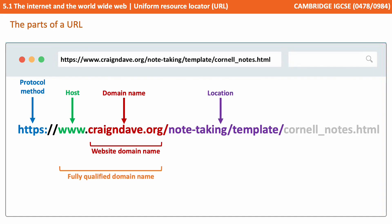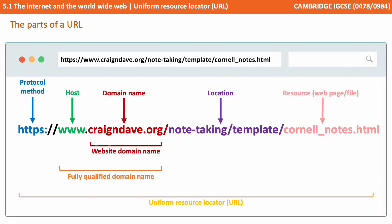Depending where you go within a given website, there may then be additional parts to the URL. Here we see a location: inside the CraigAndDave.org domain, we've gone to a page called note-taking, and then to a separate page within that called templates. And then finally, on the end, we have the actual resource — this could either be the web page itself you're viewing, or a particular file you're downloading. It's all the parts combined together which is known as the URL.